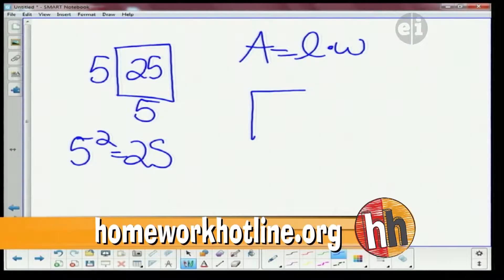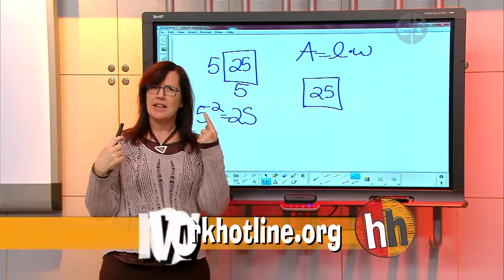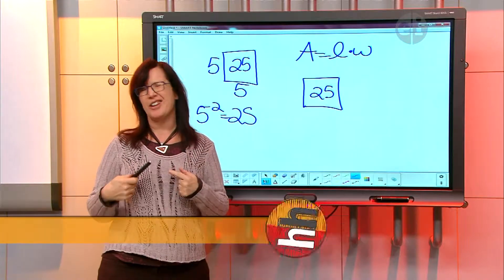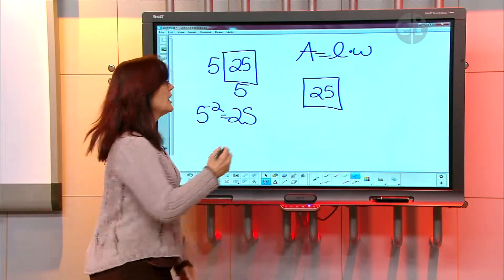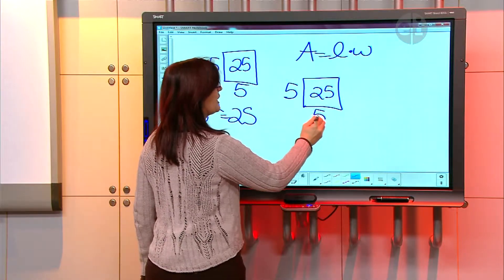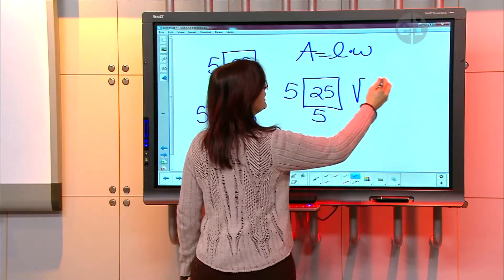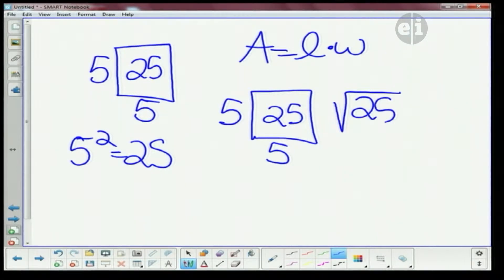If I had a square and I told you its area was 25 and I told you it was a square, what would the sides have to be? You really got to think about all the factors of 25, and then you got to think about which one would be the same number on the length side and the width side. The way that we write that is the square root of 25 is equal to 5. It's really just saying if you had a square with an area of 25, what would its sides be?